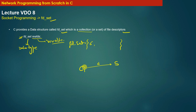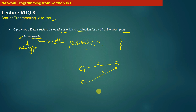Similarly, when client C2 gets connected with the server S, the server S will create a communication file descriptor for client C2 — let this be 7. So 7 will be added to the fd_set or readfds set. Whatever be the number of communication file descriptors the server has created to service connected clients, all those communication file descriptors will be added to this fd_set.